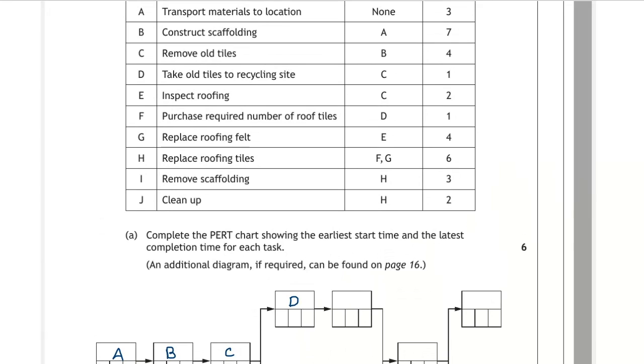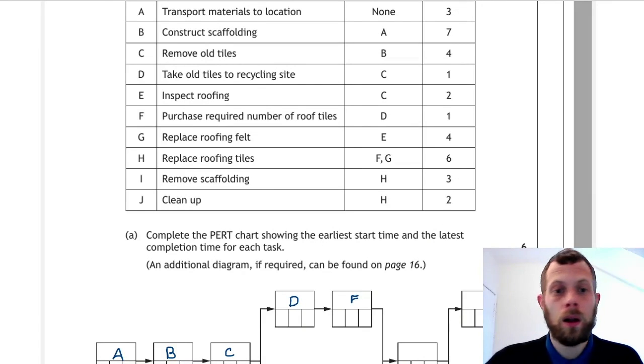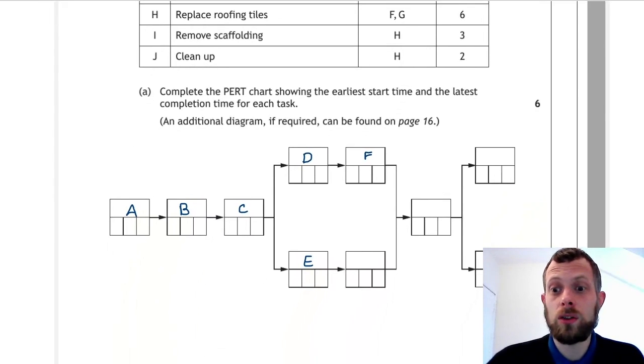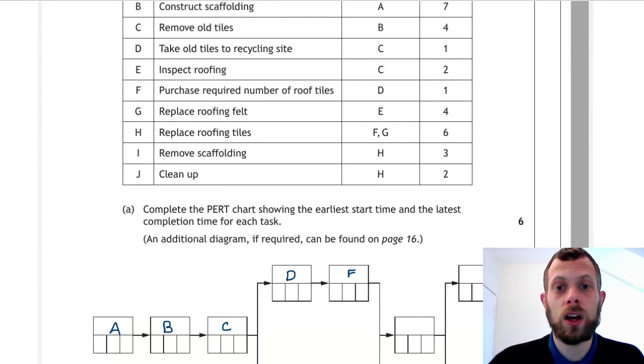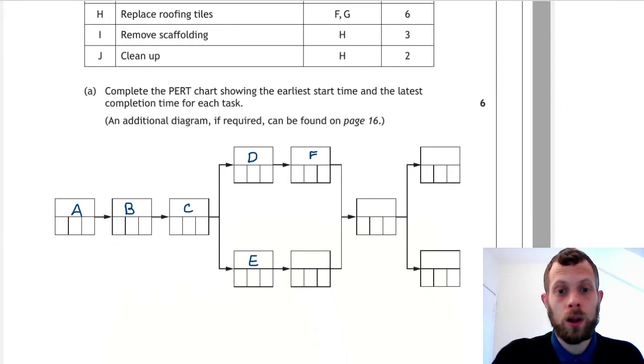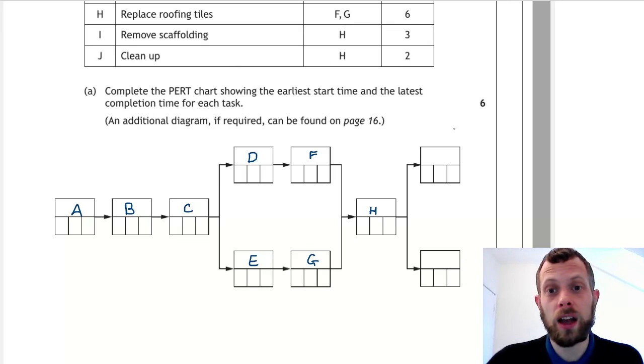Well depending on D is F, so this will be F. We also need to see what depends on E, and that is task G. Now what task depends on F and G? You can see that that is task H. So this is G and this is H.